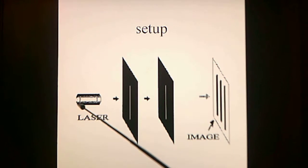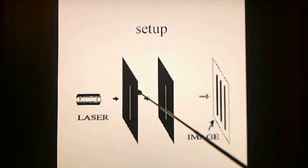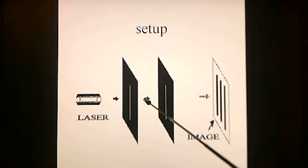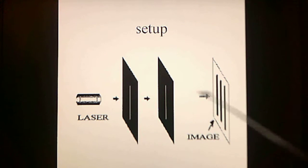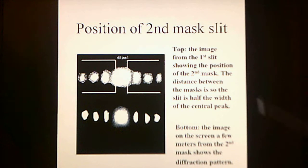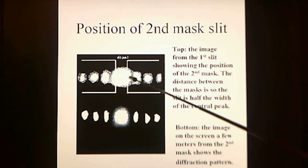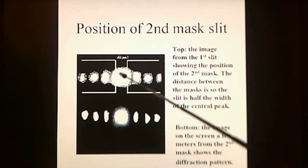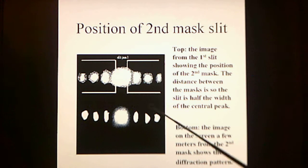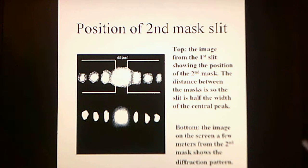The laser directs coherent light at a first mask with a slit in it, producing a diffraction pattern. A second mask then selects a portion of the diffraction pattern, and several meters away a screen receives the projected image. The slit width of the second mask is about half the distance between the first minima around the central peak. This light is coherent, and it is doing what coherent light is supposed to do.